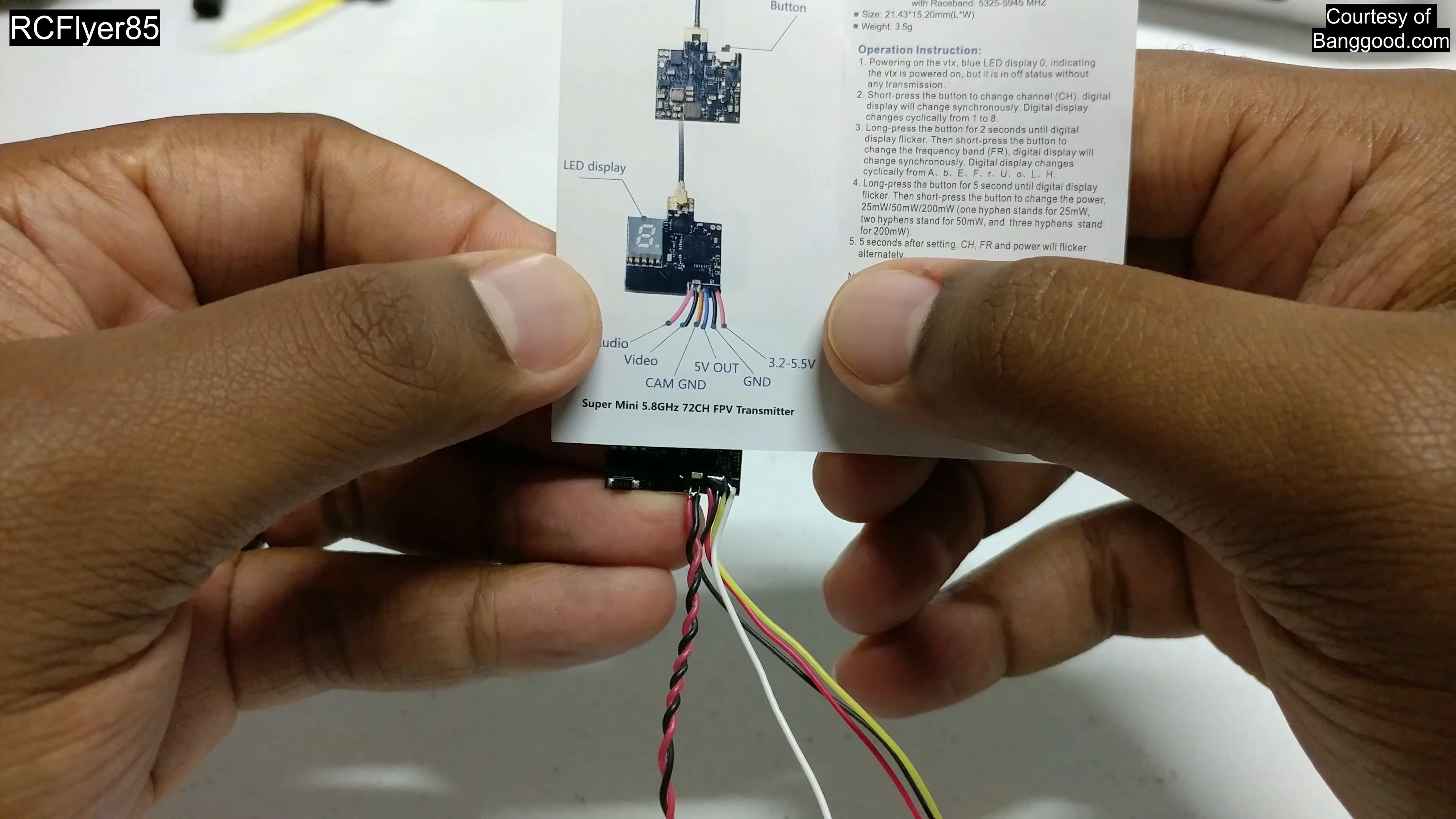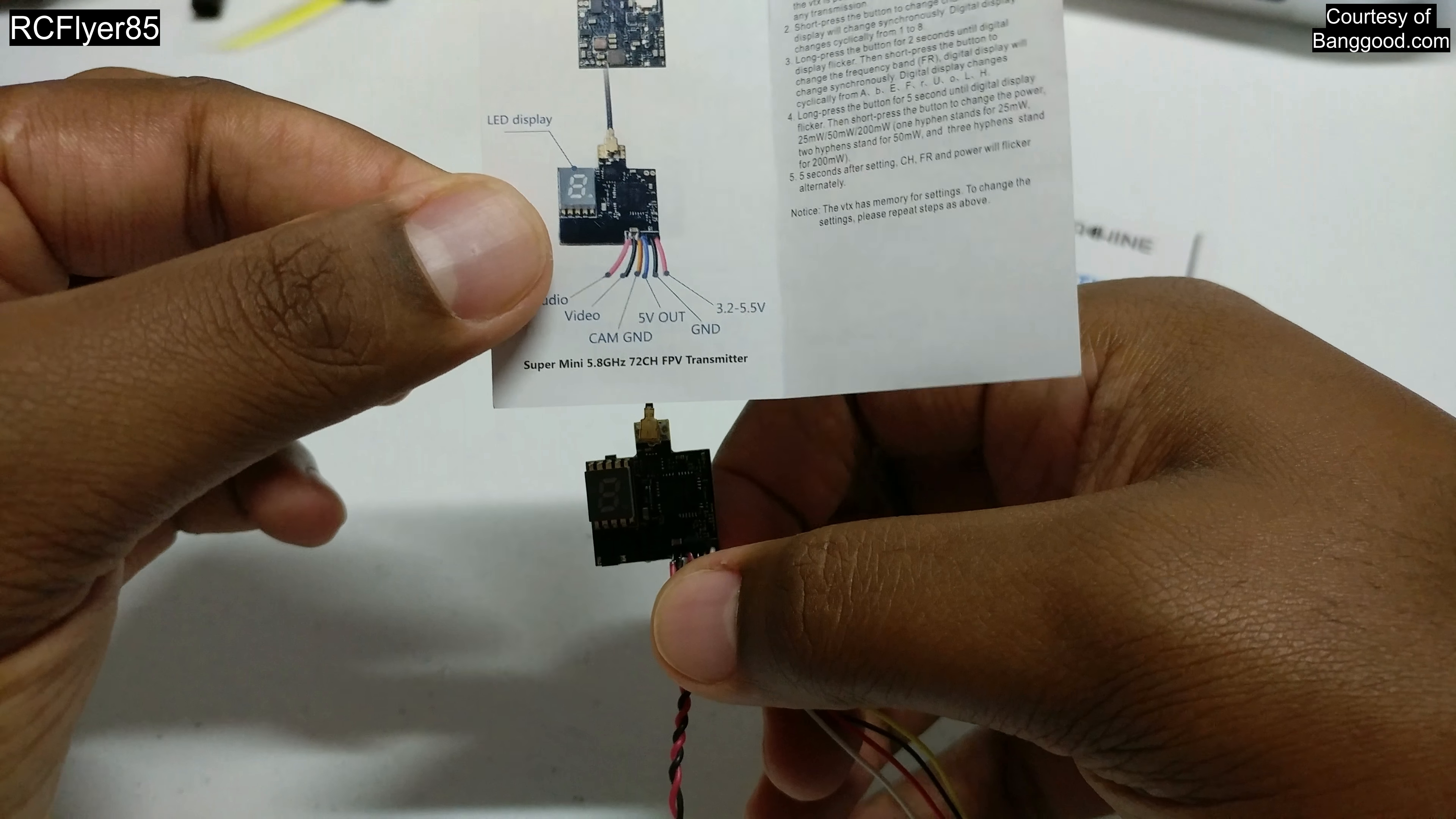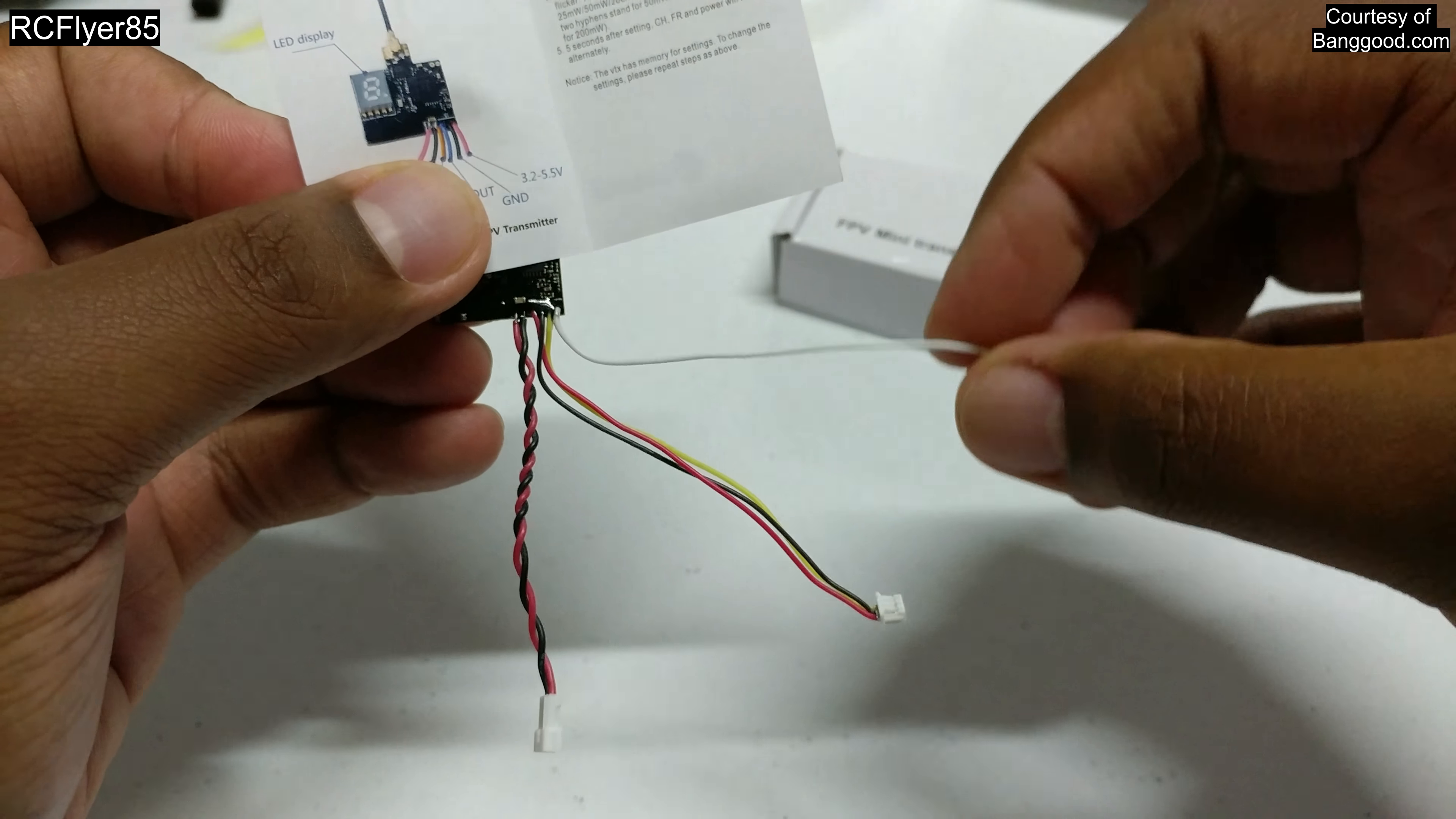Do you see where red, black, and yellow are? And those are correct because they do work. Now it says the 3.2 to 5.5 volt is out on the far end where this white wire is, but that is incorrect. So don't follow these directions for the pinout. Just follow the common color coded sequence of black is negative, red is positive, video is yellow, and audio is white.